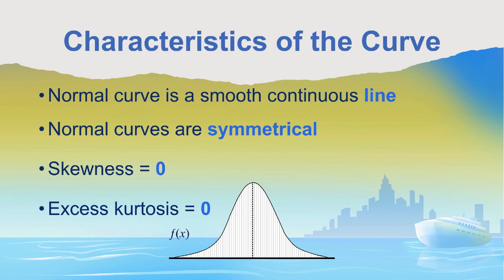The normal curve is symmetrical. If you were to fold this curve in half on the dotted line, the left half and the right half would line up exactly. The skewness of a normal curve equals zero, and the excessive kurtosis would equal zero.